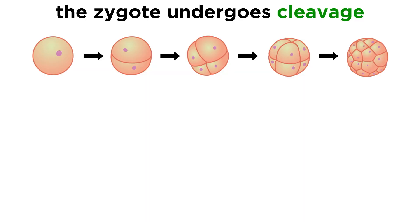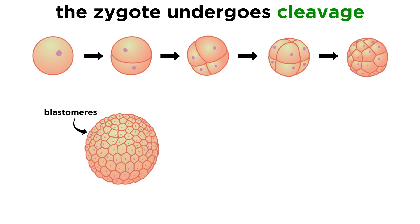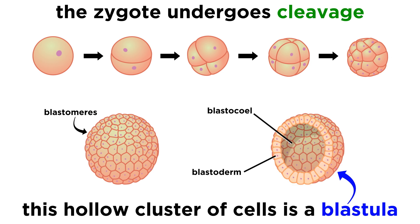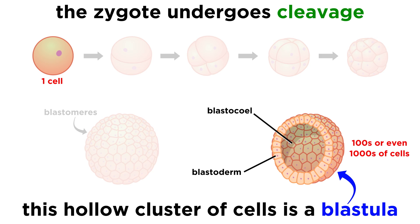This single cell then goes through a process known as cleavage, where it divides repeatedly, thus converting a single large cell into many smaller cells called blastomeres. During cleavage, there is no growth, only a subdivision of mass, which continues until normally sized cells form into a cluster called a blastula. At this point, the embryo has gone from a single cell to a few hundred or even a few thousand.